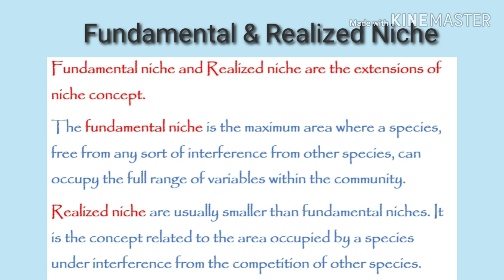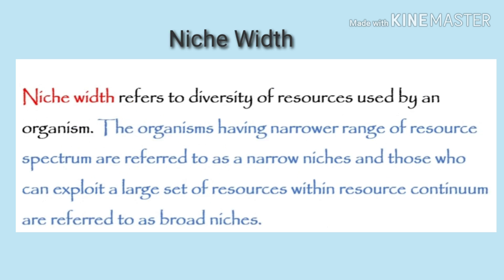The realized niche is usually smaller than the fundamental niche and is actually the real niche where the organism actually lives. Realized niche is the actual region occupied by the species. Fundamental niche covers the range of conditions, roles, and resources under which a species survives, grows, and reproduces, whereas the realized niche exists within the fundamental niche — it is the area where the organism actually lives, while the fundamental niche is the maximum area coverable without interference from other species.